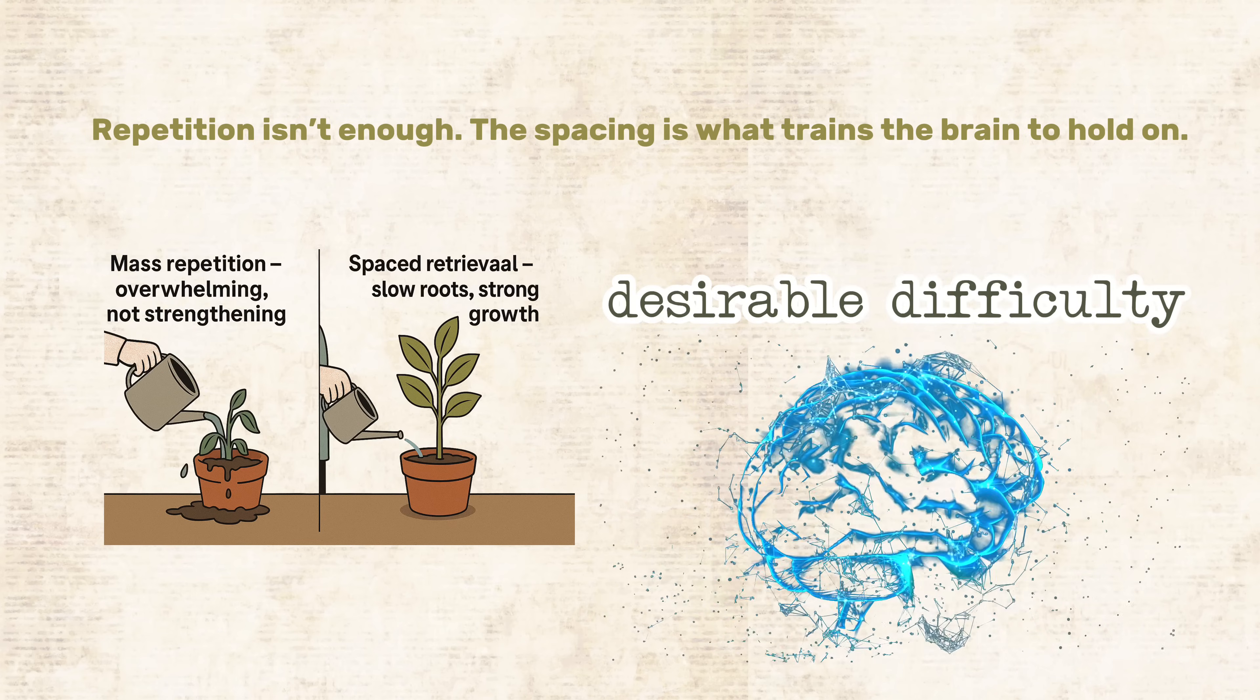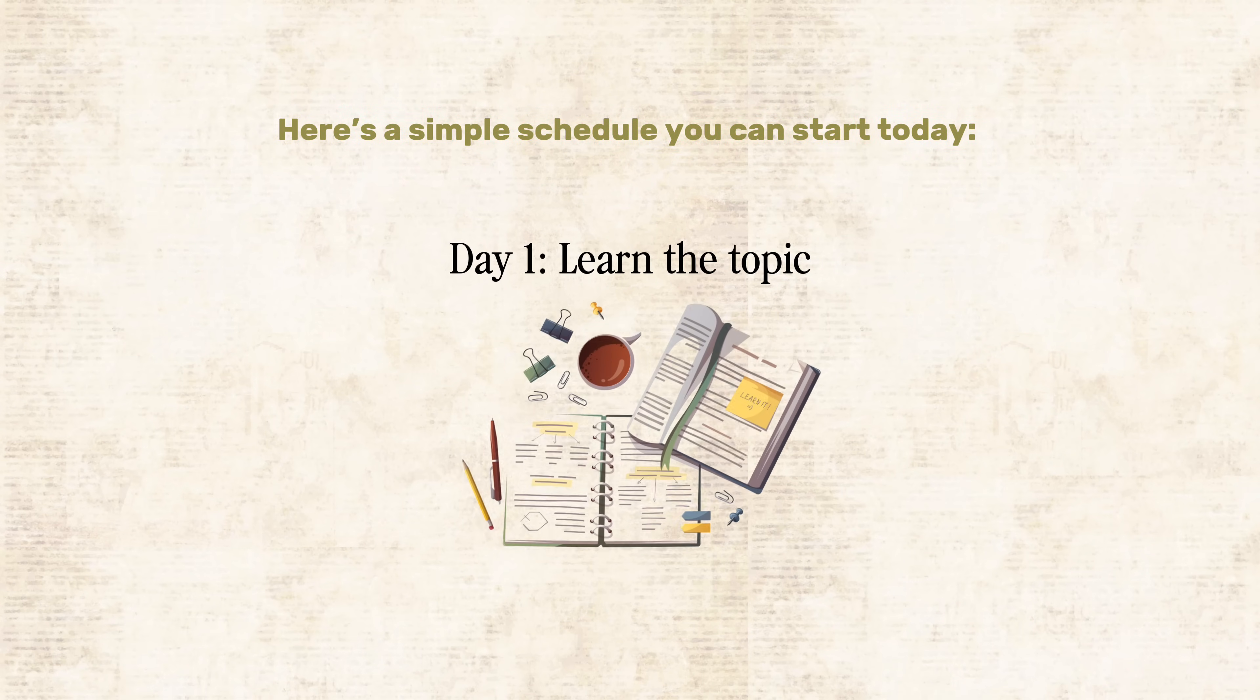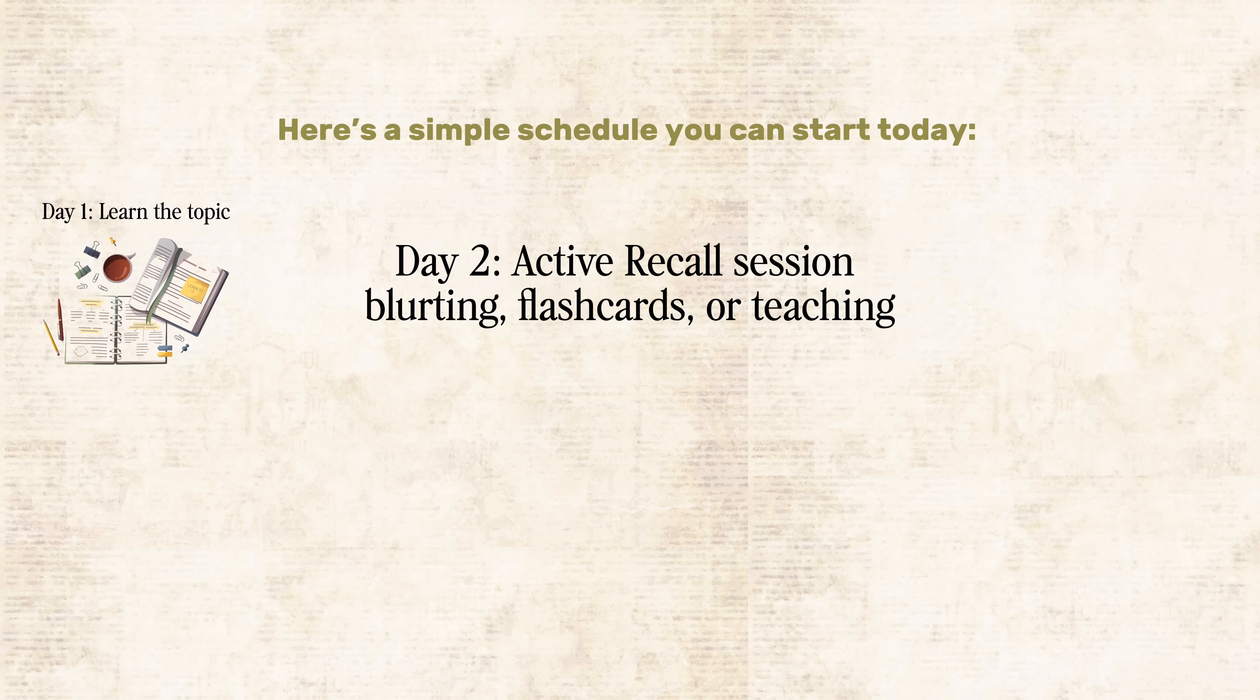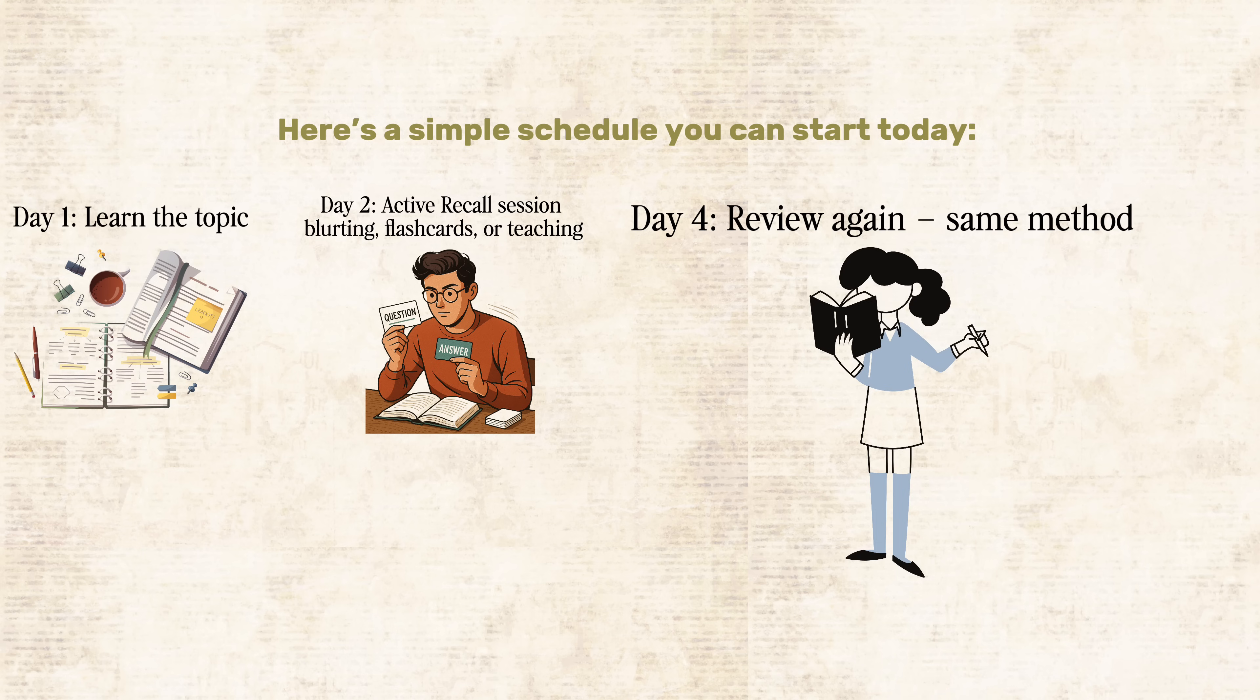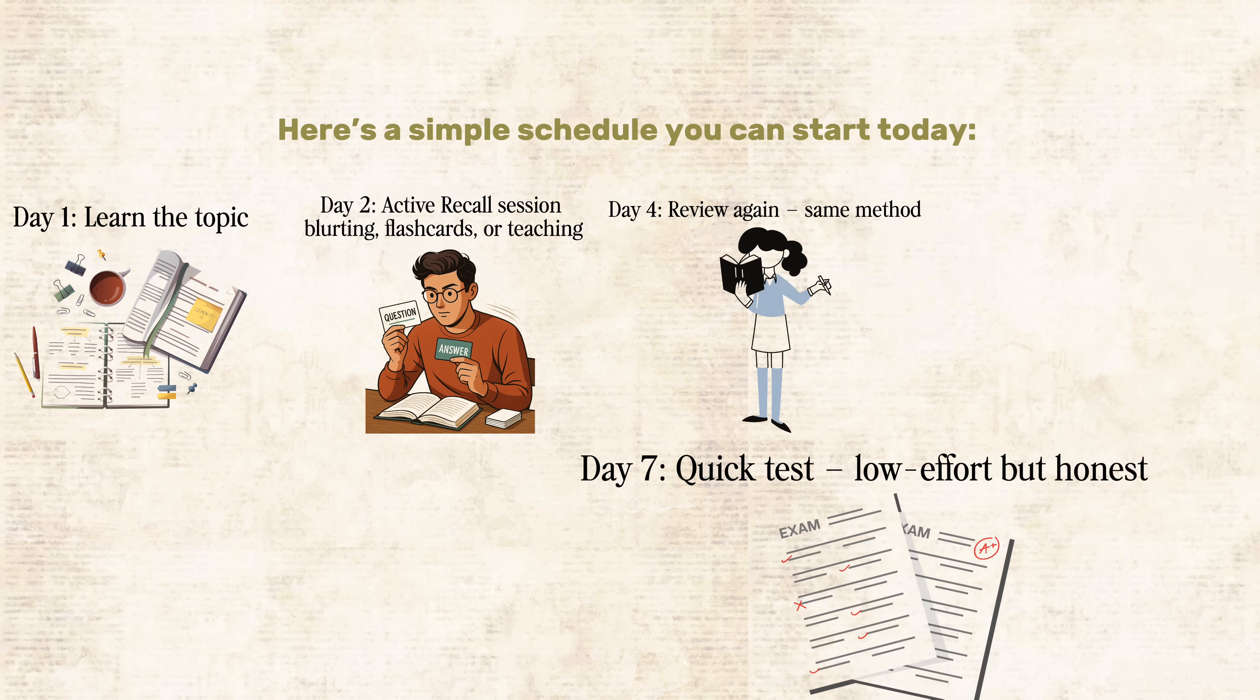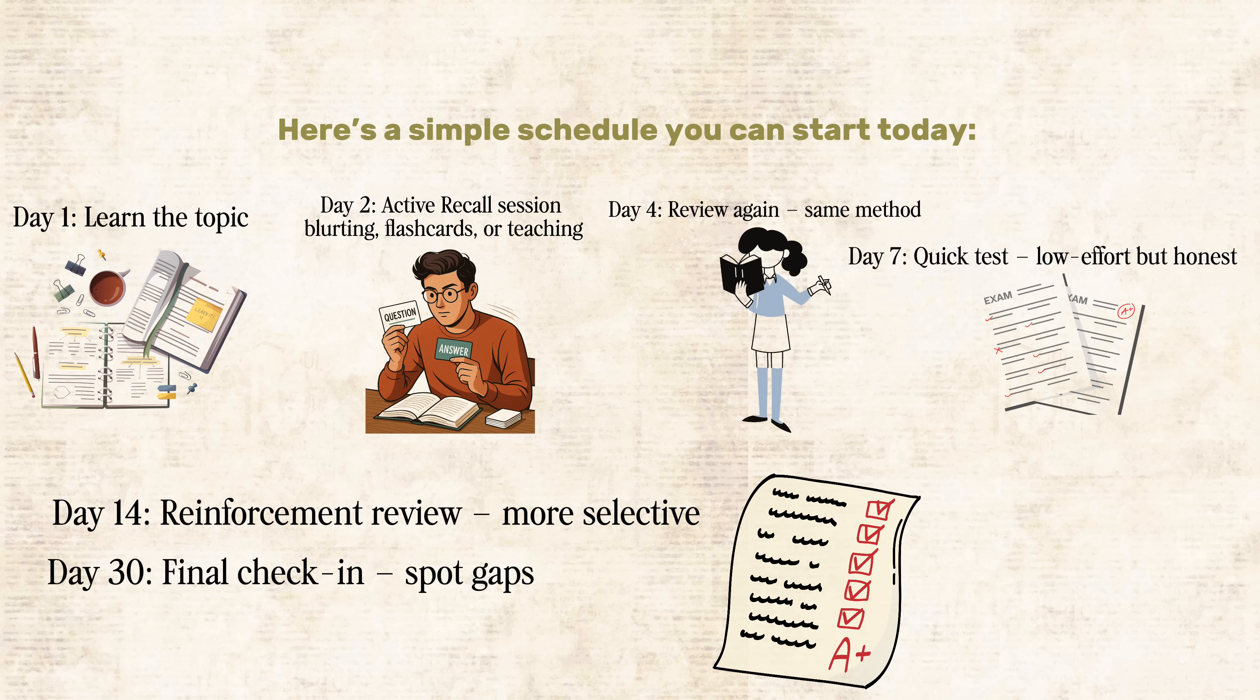A simple manual spacing system. No app needed. You don't need software to use spaced repetition. Here's a simple schedule you can start today. Day 1. Learn the topic. Day 2. Active recall session. Blurting, flashcards, or teaching. Day 4. Review again. Same method. Day 7. Quick test. Low effort, but honest. Day 14. Reinforcement review. More selective. Day 30. Final check-in. Spot gaps. It's not about going over everything again. Focus on weak points. What you couldn't remember last time. That's how you use time efficiently.